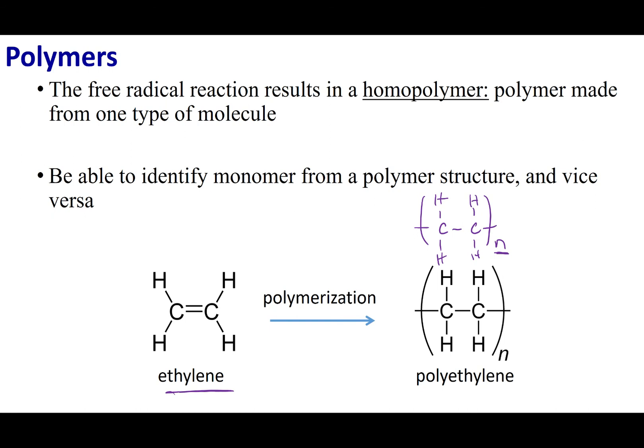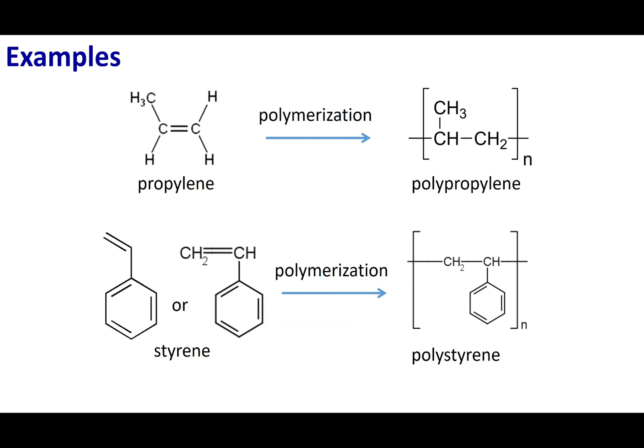Now, I want you to be able to go both ways. So if I give you the monomer right here, you should tell me the structure of the polymer. But you can also work your way backwards. If I go ahead and give you what the polymer looks like, you should be able to tell me what monomer was used to construct that polymer.